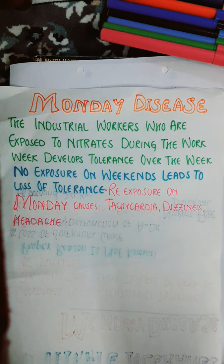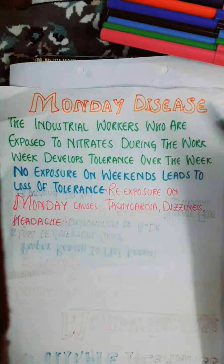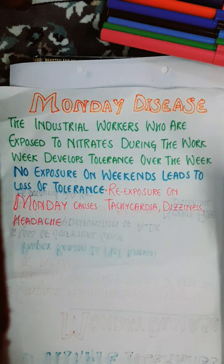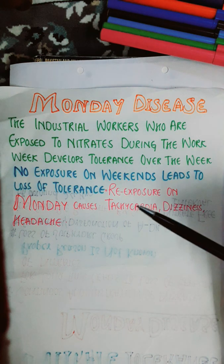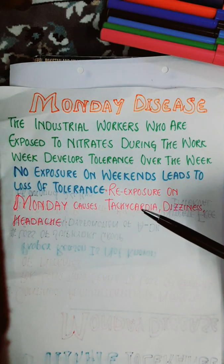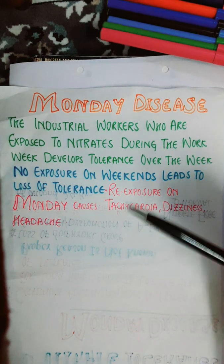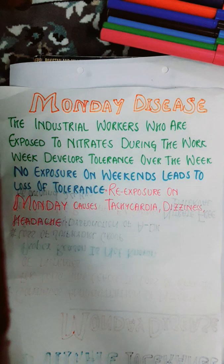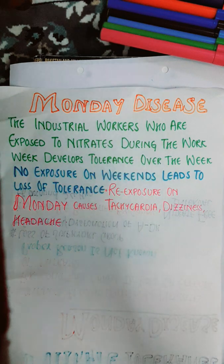On re-exposure on Monday, this causes tachycardia — specifically reflex tachycardia — dizziness, and headache due to the vasodilatory effect of nitrates. Industrial workers exposed to nitrates during the work week develop tolerance; no exposure on weekends leads to loss of tolerance; and when they return on Monday, re-exposure causes these symptoms. This is why it is referred to as Monday disease. Hope this is clear — don't forget to subscribe, share, and like. Thank you.